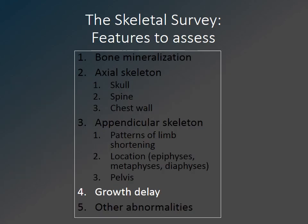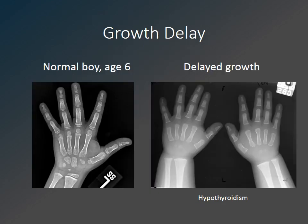Many skeletal dysplasias have aspects of delayed growth, and it may be helpful to calculate the bone age when interpreting a skeletal dysplasia. A six-year-old boy with hypothyroidism demonstrates delayed carpal bone development and absent visible epiphyses, in contrast to the normal six-year-old hand on the left.